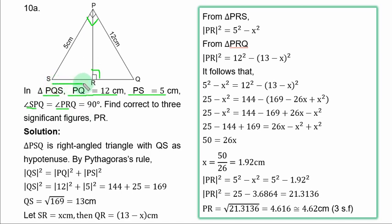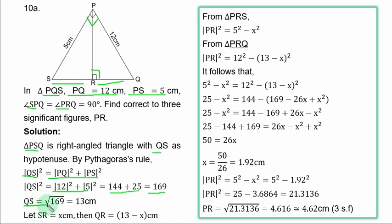Let SR = x cm. Then QR = 13 - x. From triangle PSR (right-angled): 5² = PR² + x², so PR² = 25 - x². From triangle PRQ (right-angled): 12² = PR² + (13 - x)², making PR² the subject: PR² = 144 - (13 - x)². Since both expressions equal PR², we set 25 - x² = 144 - (13 - x)². Expanding: 25 - x² = 144 - 169 + 26x - x², which simplifies to 25 = -25 + 26x, so 50 = 26x, giving x = 50/26 = 1.92 cm.